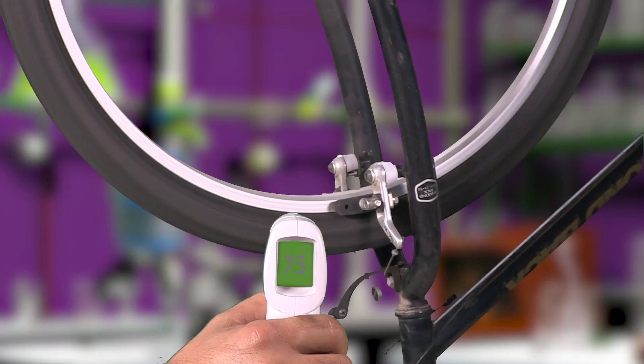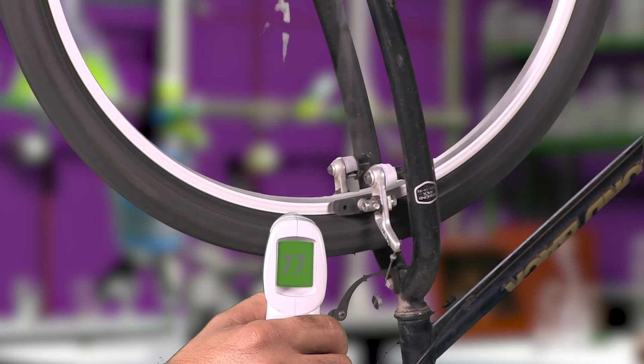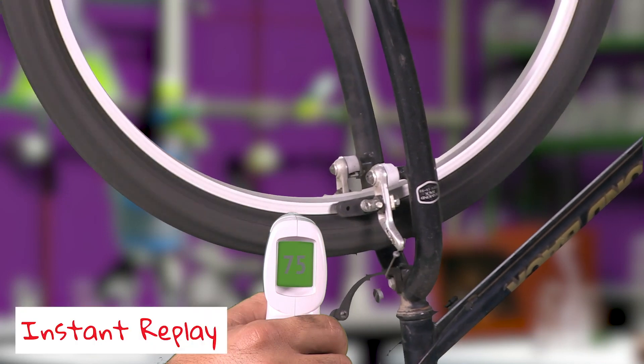You can see that this spinning wheel's temperature is at 75 degrees. But if I slowly apply the brakes, you can see its temperature increases.